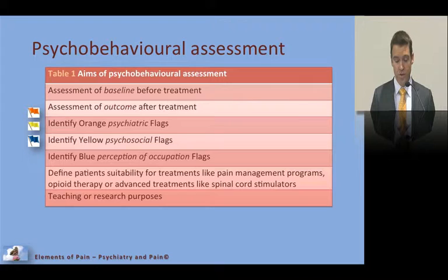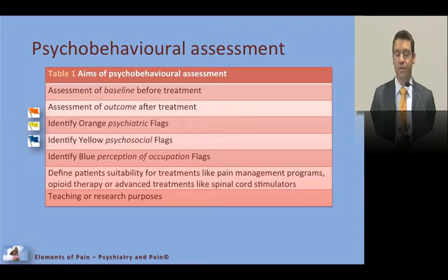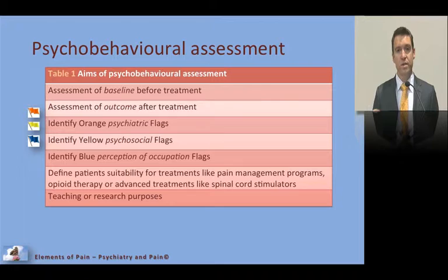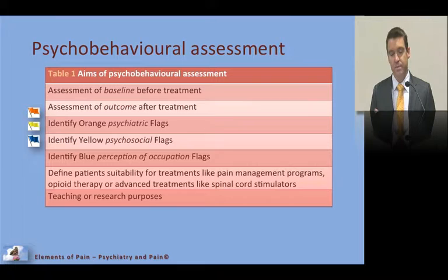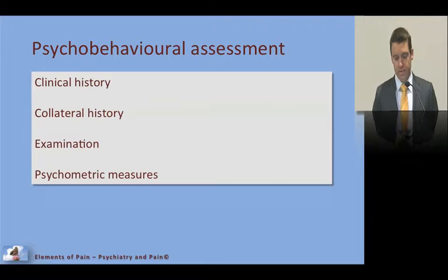Further aims include identifying occupational and vocational issues, defining whether somebody is suitable for advanced therapies such as a pain management program, spinal cord stimulators, or opioid therapy — assessing patients for opioid risks — and the assessment can also be done for teaching or research purposes.